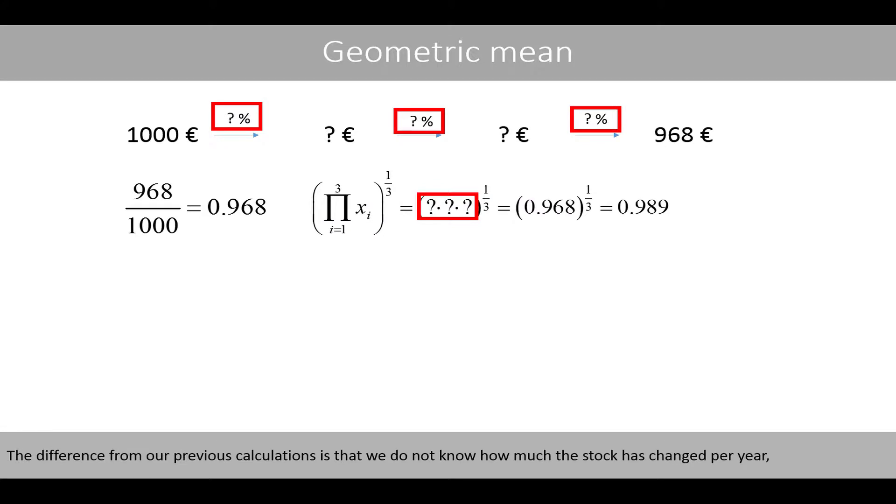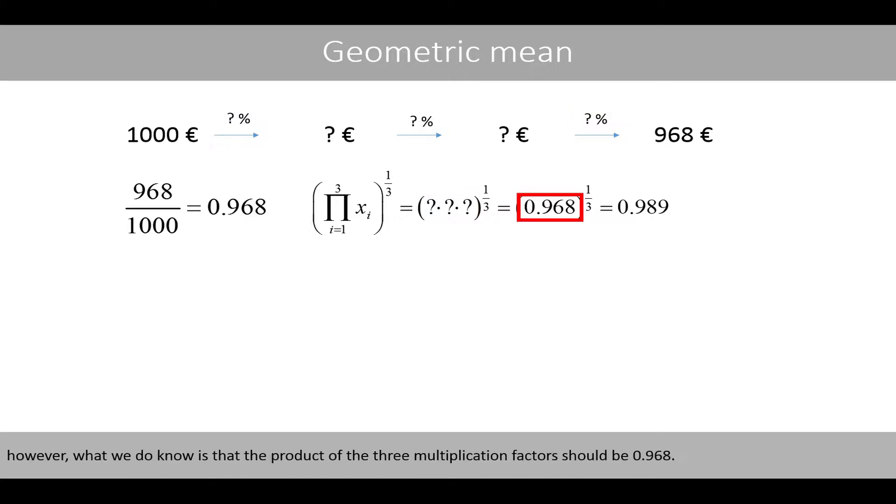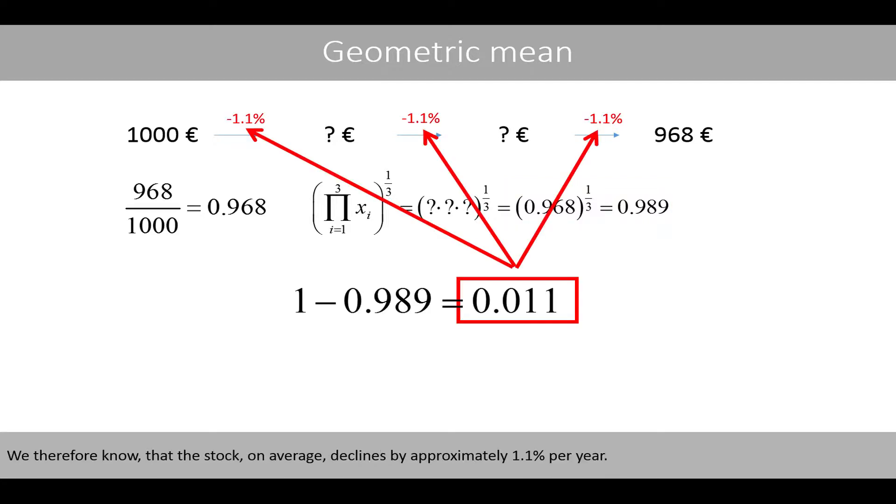The difference from our previous calculations is that we do not know how much the stock has changed per year. However, what we do know is that the product of the three multiplication factors should be 0.968. 0.968 to the power of 1 over 3 is approximately equal to 0.989. We therefore know that the stock on average declines by approximately 1.1% per year.